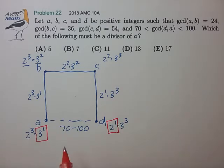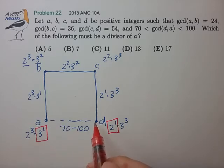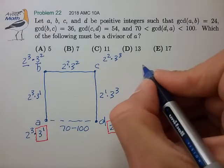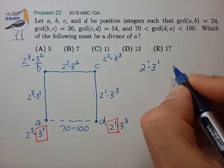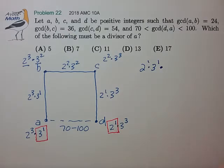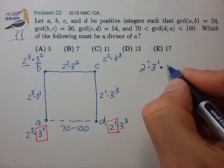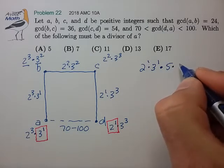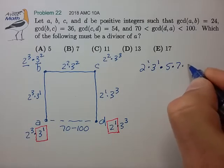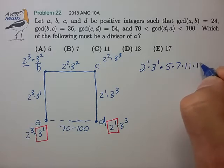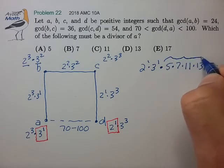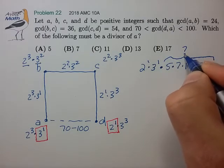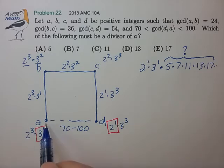So we know that the greatest common divisor between A and D has to be of the form 2 to the first times 3 to the first times some additional factors, which could be of the form perhaps 5 times 7 times 11 times 13 times 17, whatever. These are the question mark factors that we're going to try to consider for the greatest common divisor between A and D.